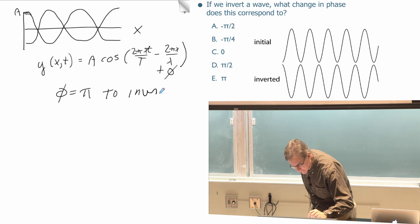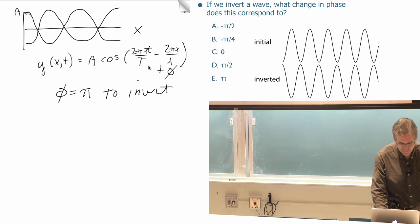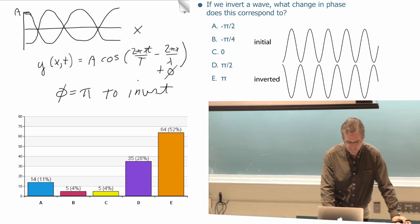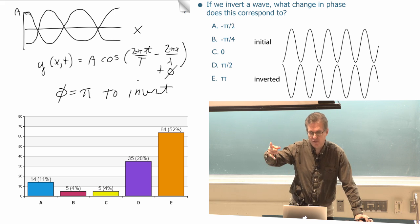No one's shouting out the correct answer. Add pi, the phase pi will invert the wave, so that is the correct answer is E. Let's see what people did. Most of you got it. You're smarter than the 730 lecture as it turns out they had sort of the opposite sense for D and E.